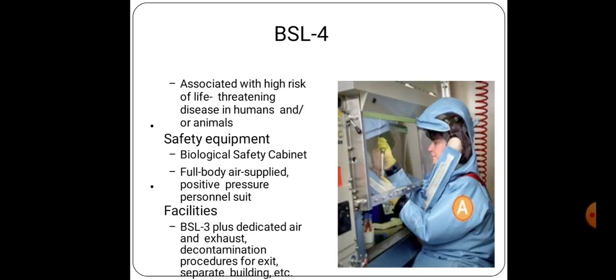BSL-4: associated with high risk of life-threatening disease in humans and animals. Safety equipment includes biological safety cabinets, full body air-supplied positive pressure personal suits. Facilities include BSL-3 features plus dedicated air and exhaust systems, decontamination processes for exit, and separate buildings.